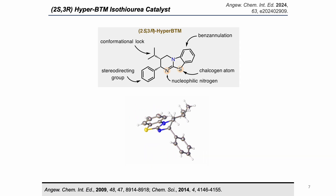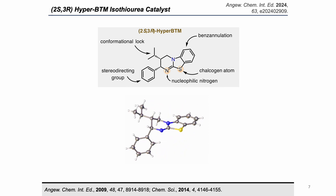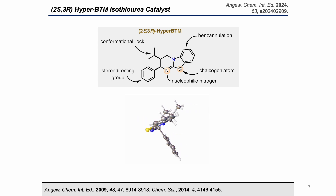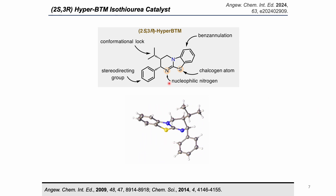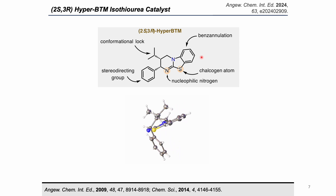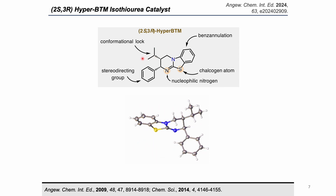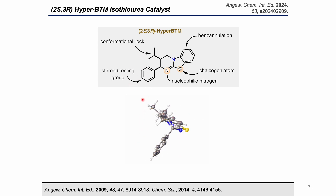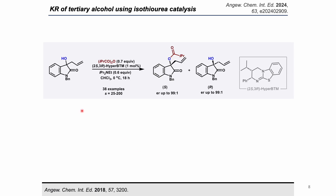I would like to introduce our Hyper-BTM isothiurea catalyst, which is a Lewis base isothiurea catalyst. It features a nucleophilic nitrogen, a chalcogen atom for chalcogen bonding, a fused ring for stabilization of the transition state, an isopropyl group as a conformation lock, and a phenyl group as a stereo-directing group. There is one report from our group on the kinetic resolution of tertiary alcohols where the enantioselectivity was great, with a selectivity factor up to 200 using this Hyper-BTM isothiurea catalyst.